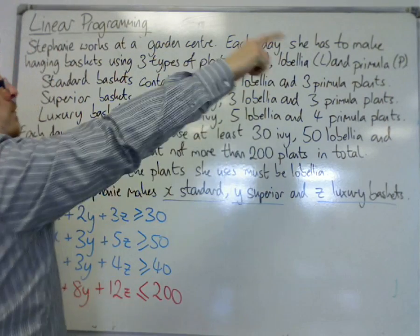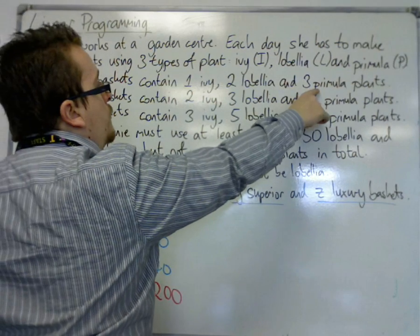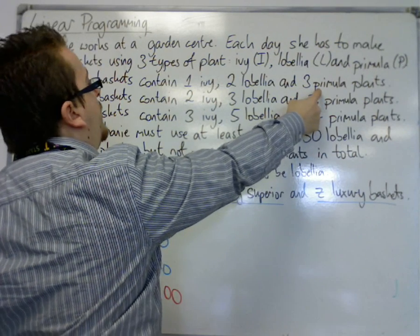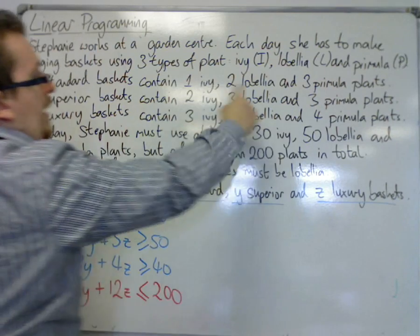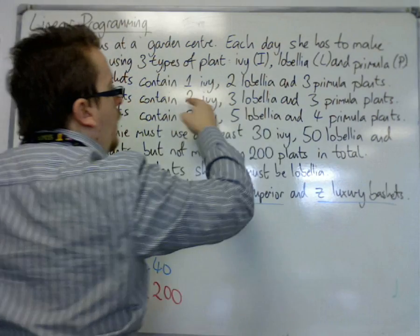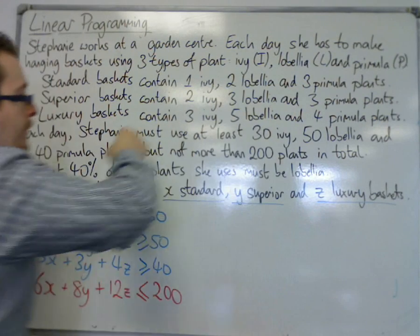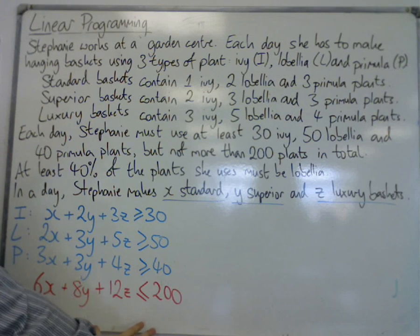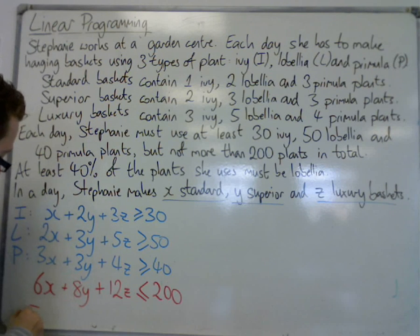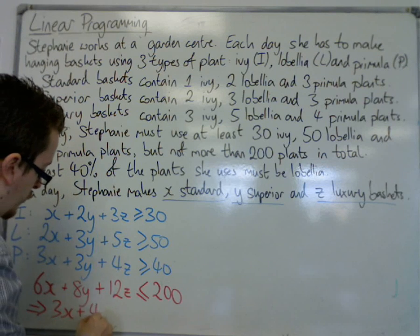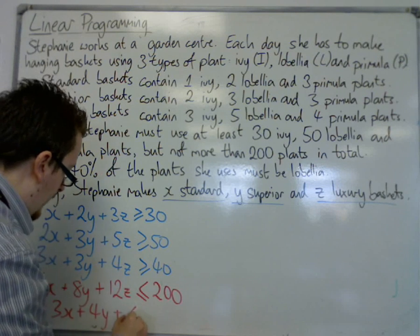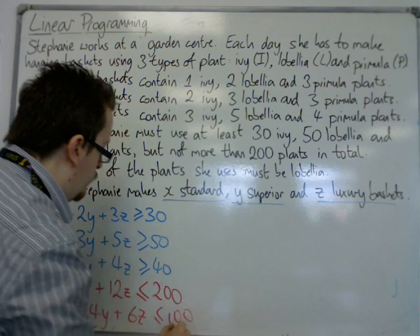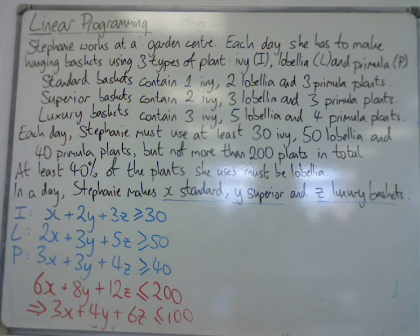Looking at the rows: one Ivy, two Lobelia, and three Primula plants in a standard basket gives six x. Then I've got eight y, and then 12 z. Once combined, it's less than or equal to 200. And I can simplify that inequality by dividing through by two, so I get three x plus four y plus six z must be less than or equal to 100. So that inequality is now simplified.